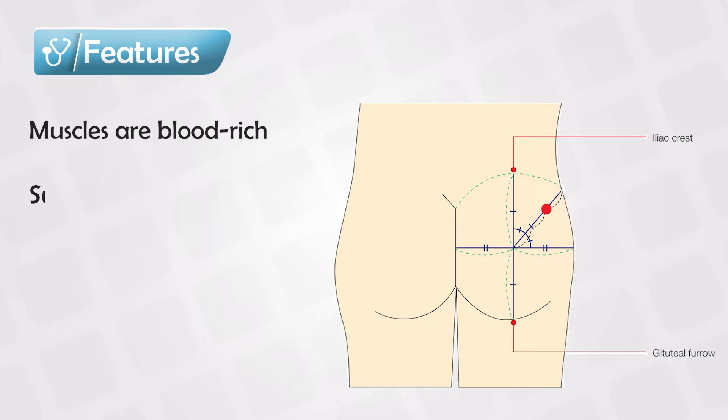In the buttock area, we divide it into four quadrants. Simply said, the safest way is injecting into the superior lateral quadrant.